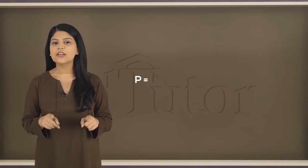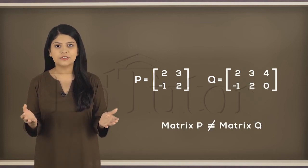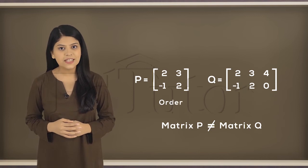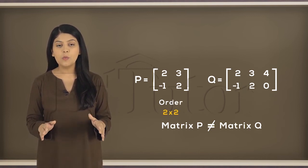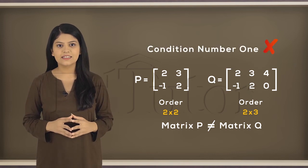We look at one final example. Look at matrices P and Q. They're clearly unequal matrices since the order of matrix P is 2 by 2, while the order of matrix Q is 2 by 3.